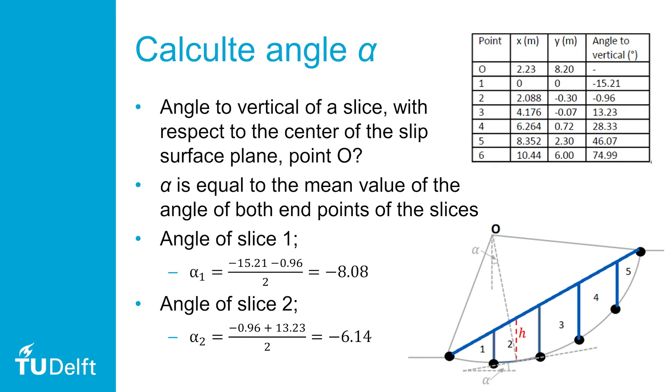The coordinates and angles to point O of the corners of the slices, in the picture shown as the black dots, are given in the table and are also given in the exercise. With this information, we are able to determine the alpha halfway each slice. Alpha is equal to the mean value of the angle of both end points of the slices. Using this method for each slice, the angle to the vertical is given in the table.